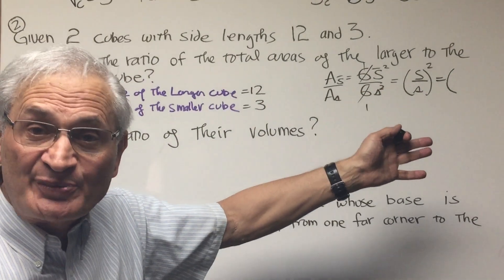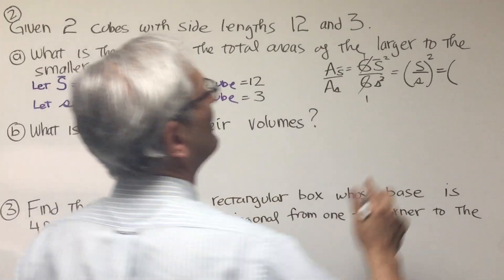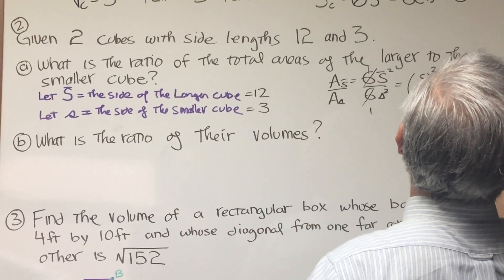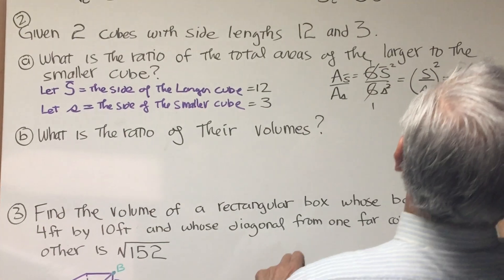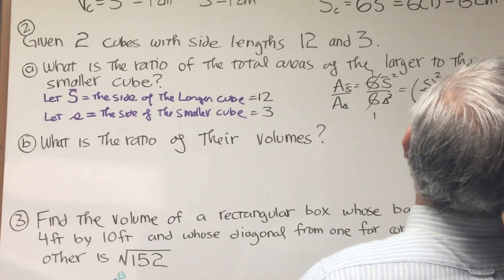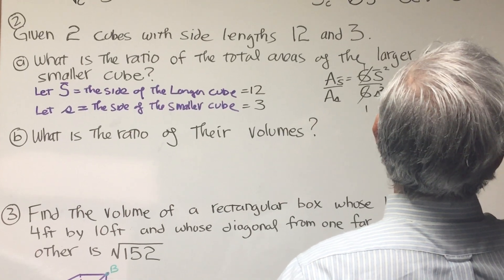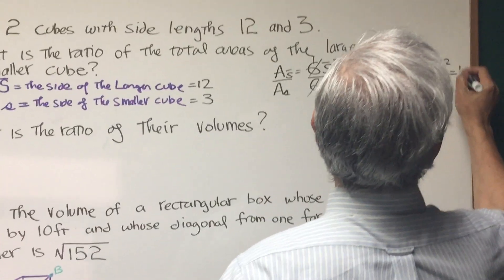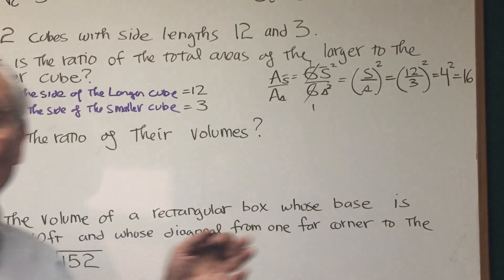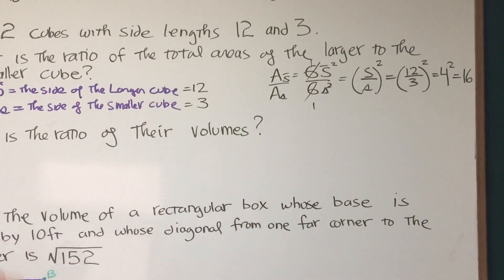Okay, and we can reduce them first before we square them to make the mathematics easier. So this is going to be 12 is the length of the larger cube, and 3 is the side length of the smaller cube. 12 over 3 is 4. 4 squared is 16. So that's the ratio of the areas of the larger to the smaller cube.